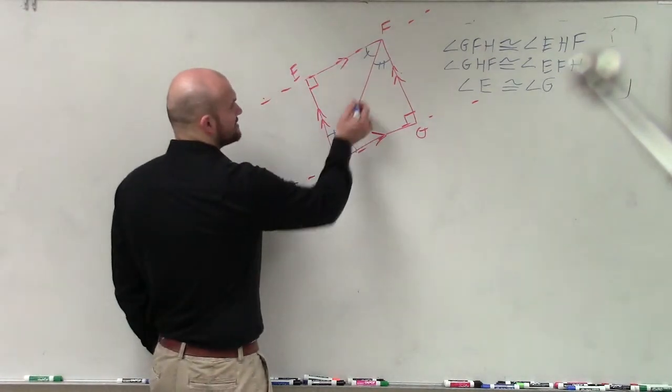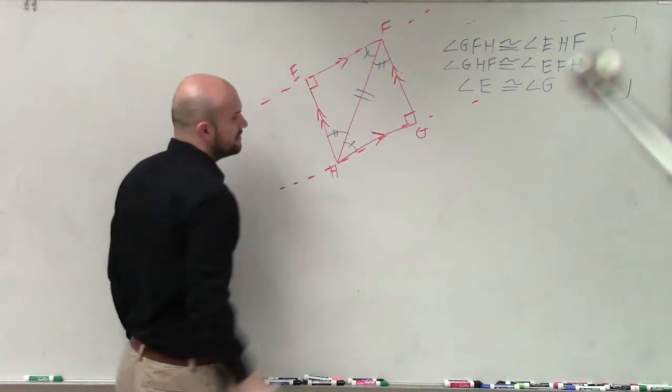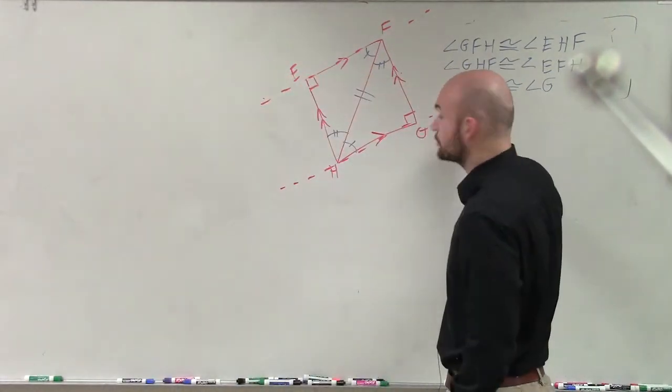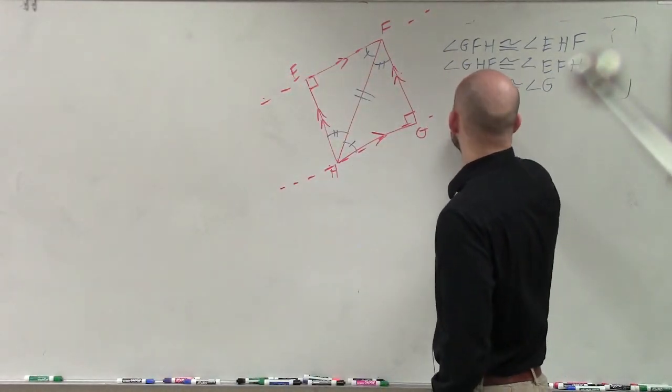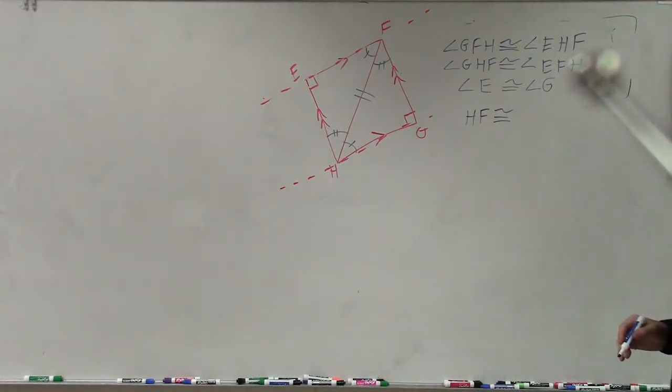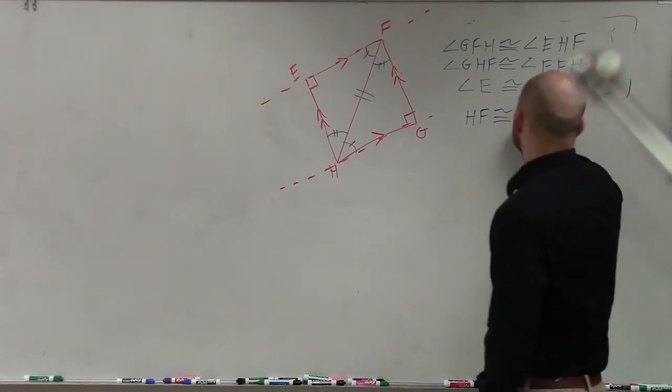Now, also, when we're not done with our congruencies, we also know that these line is the exact same line. So therefore, we know that that side is congruent to that side for both triangles. So I can say HF is congruent to FH.